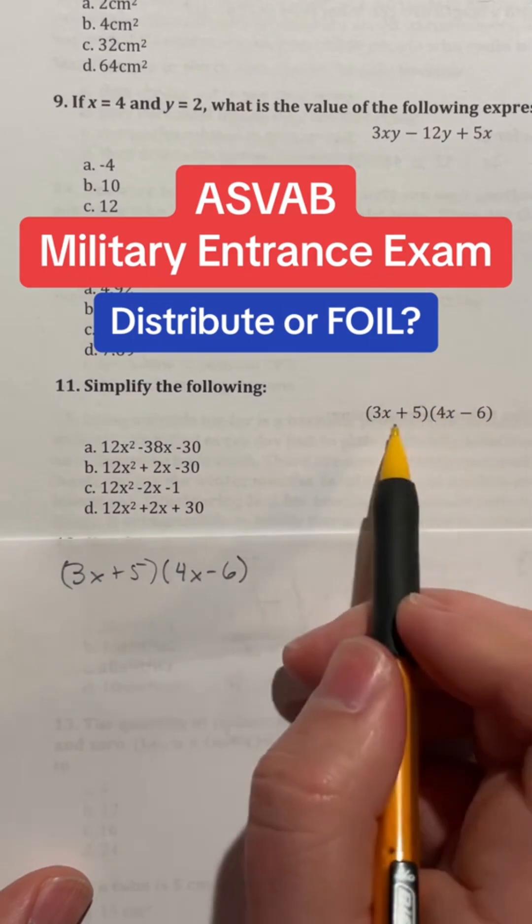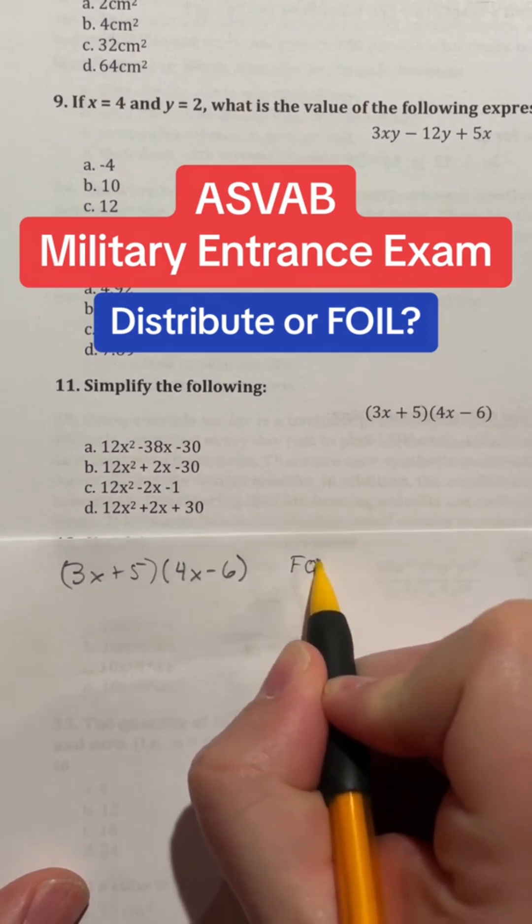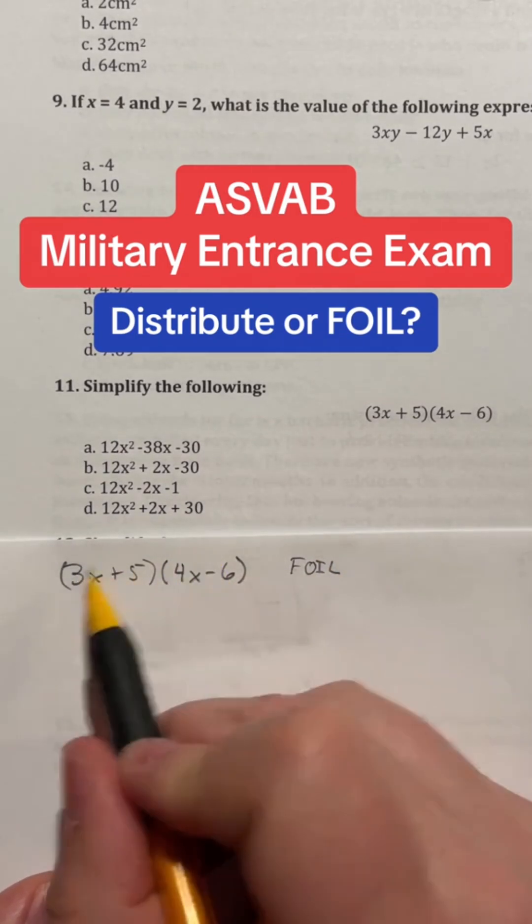When I'm looking at this we usually use the word FOIL. Now what does the word FOIL mean? Well, it just means that we're distributing and this just helps remind us all the different terms that we need to multiply together when we are distributing.